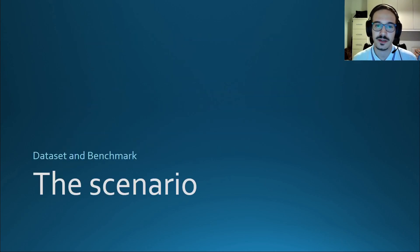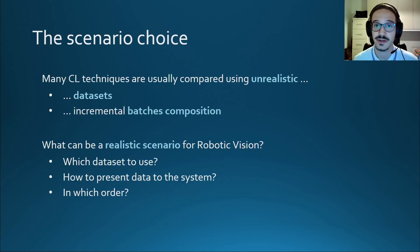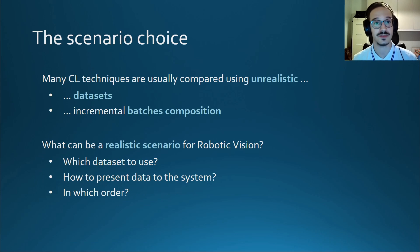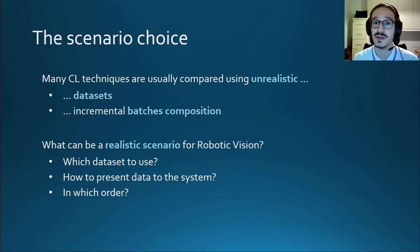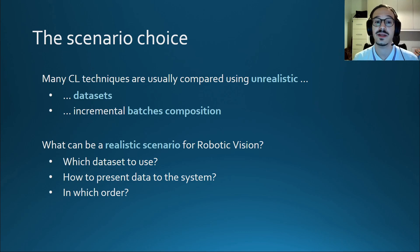In our work we wanted to target a scenario that had to be realistic, and in particular we addressed a scenario belonging to the robotic vision area. Many existing continual learning techniques are aimed at artificial benchmarks. In continual learning, defining a benchmark means choosing an appropriate dataset and defining the composition of incremental batches. Each incremental batch can be seen as an experience our system is exposed to and from which it can acquire some knowledge about the world. The goal here is to recreate a real-world situation for a robotic system.